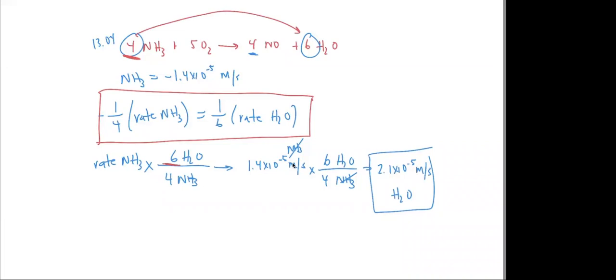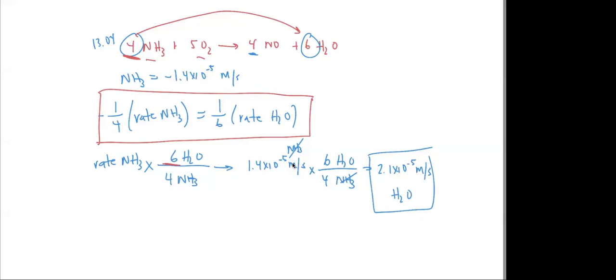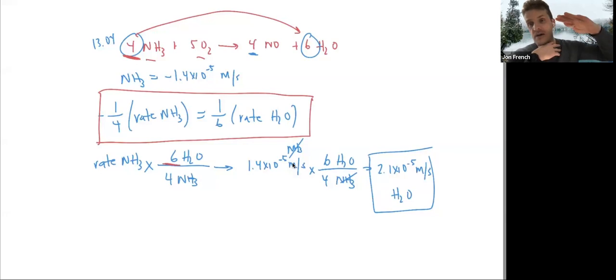Yeah, exactly. So if it's asking about ammonia or oxygen, those are negative because they're disappearing from the reaction, because rate is change in concentration over change in time. So ammonia concentration would be decreasing, oxygen concentration would be decreasing.